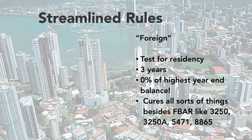For those who are foreign, there is a residency test, but if you qualify, you go back three years and amend your returns — and here's the greatest thing — your penalty is 0% of the highest year-end balance. That's pretty nice if you happen to be living offshore. It cures all sorts of things besides FBAR, like Forms 3250, 3250A, 5471, and 8865. The IRS penalizes those offshore at 0% versus 5% domestically, likely assuming that as an expat you had more reason to believe your foreign income was not taxable.